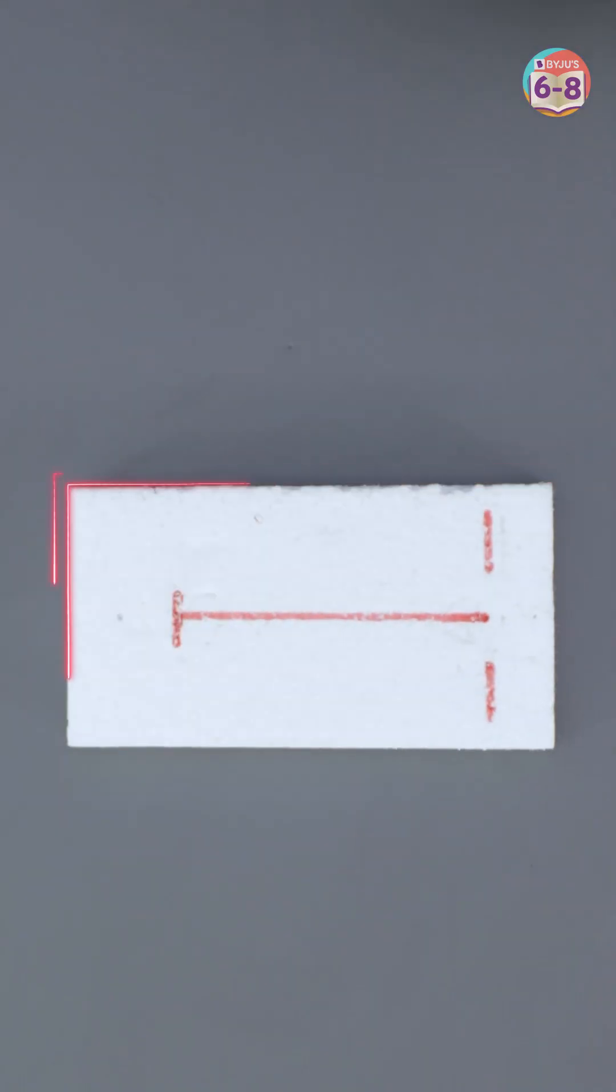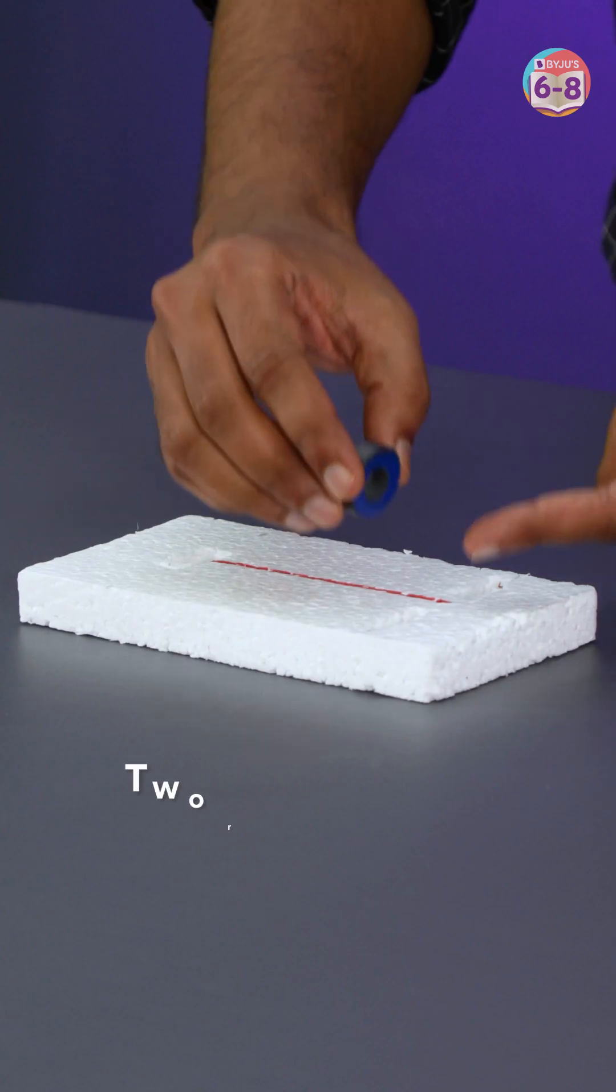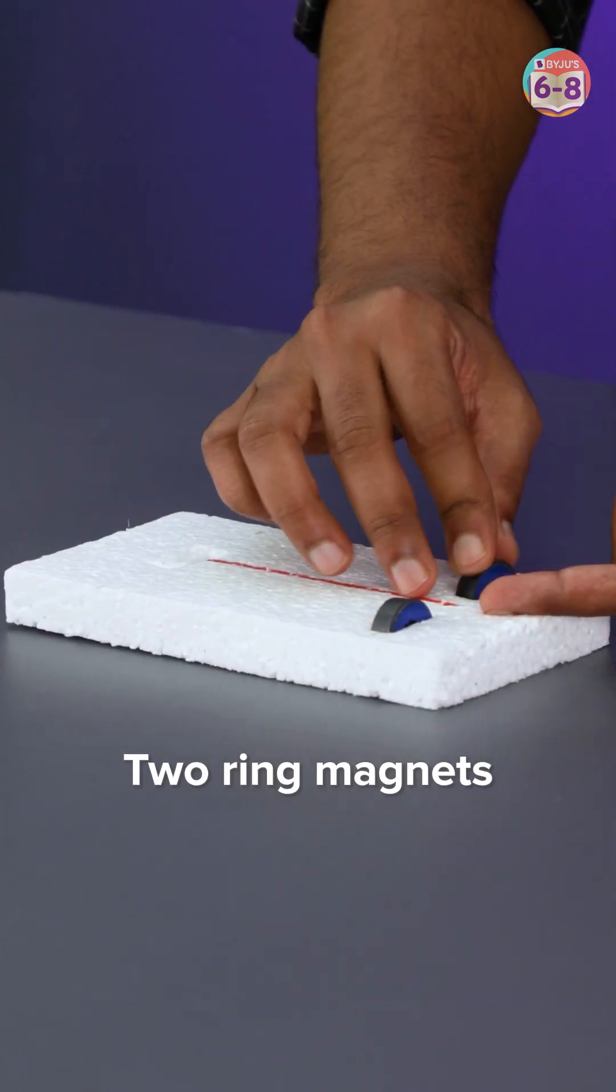First, take a thermocol board. Make three slits in this manner. Now take two big ring magnets and place them in the bottom slits.